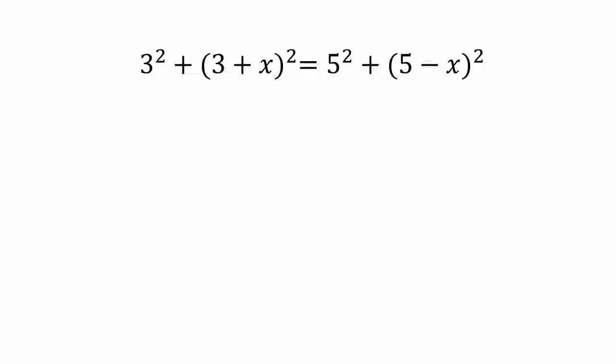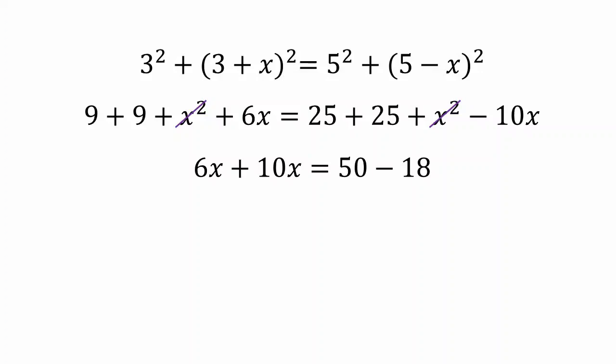Simplify this using A plus B whole square formula. We can write it like this. Now cancel x² with x² and simplify again. We will get 6x plus 10x equals 50 minus 18. Simplify again and we will get 16x equals 32. Dividing both sides by 16, we will get x equals 2.